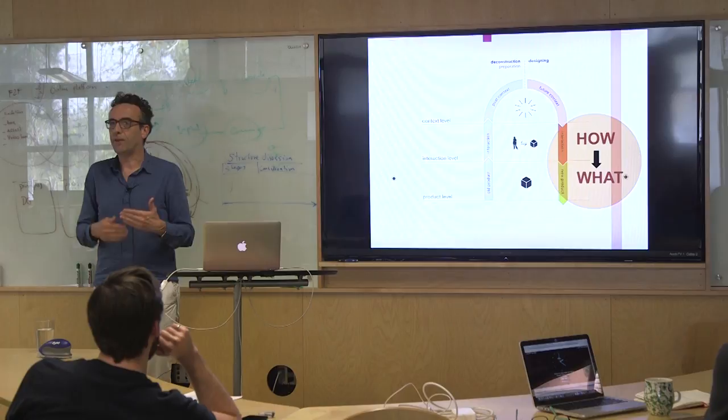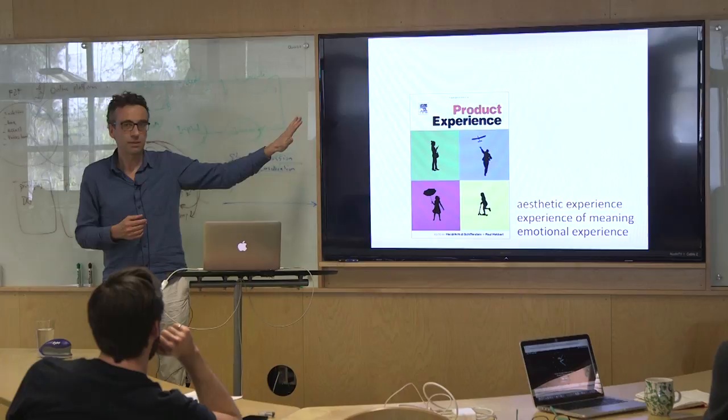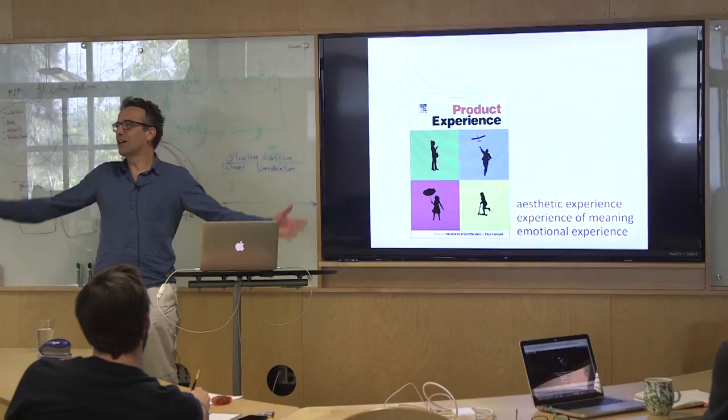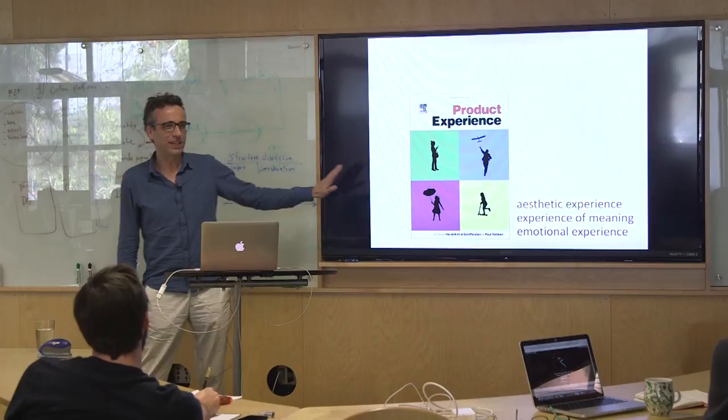It all started with understanding the transition from the how, how do we experience everyday artifacts, into the what. What kind of properties does the product, the system, the artifacts, the service need to have in order to instigate or make this experience that you are aiming for very likely to happen. And most of that work is put together already 10 years ago in this book. I didn't see it on the shelves here. It's a little... Why didn't you come very yet? It's extremely heavy. Fair enough. It's awfully heavy. It's an Elsevier book, so then you know.